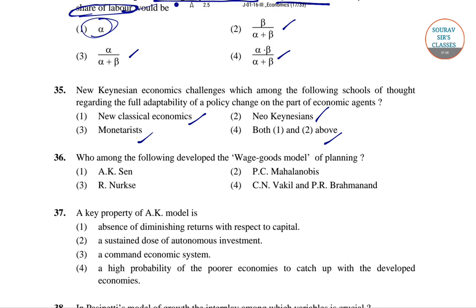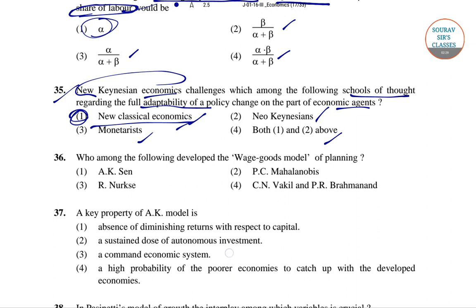For question number 35 the right answer would be option one, that is new classical economics. New Keynesian economics challenges the new classical school of thought regarding the full adaptability of a policy change on the part of economic agents. So the right answer for question 35 is new classical economics.